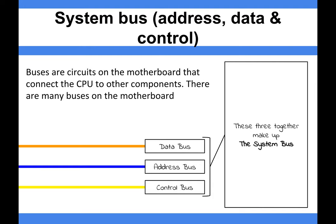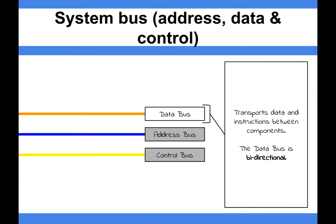The data bus transports data and instructions between components on the motherboard. It's bi-directional, so the data bus can travel and send data in both ways, to and from the processor.